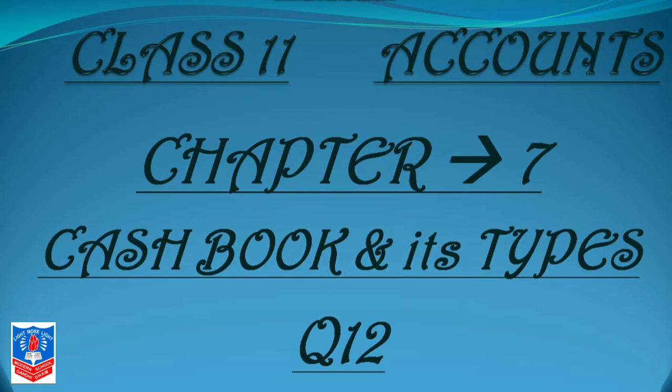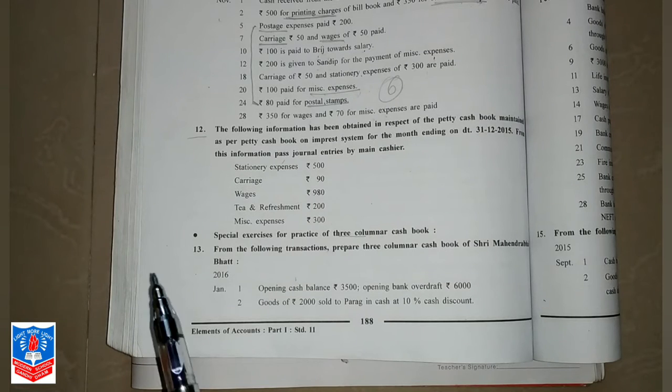Today we will start with question number 12 in which we are supposed to write down journal entry by chief cashier. So let us start and understand the question number 12.